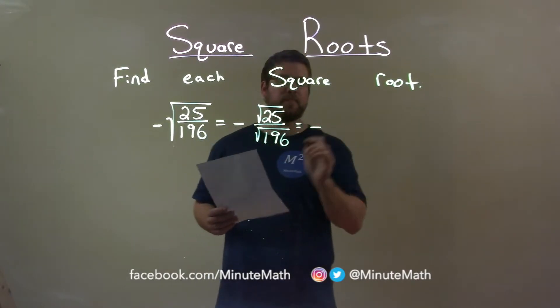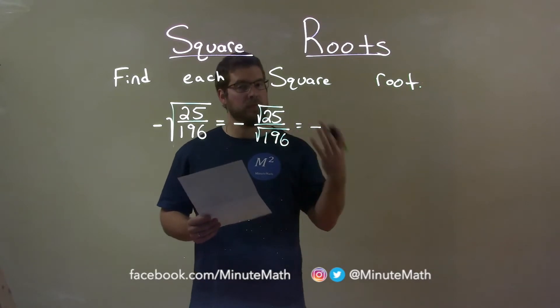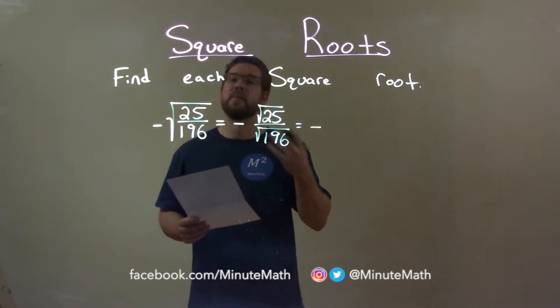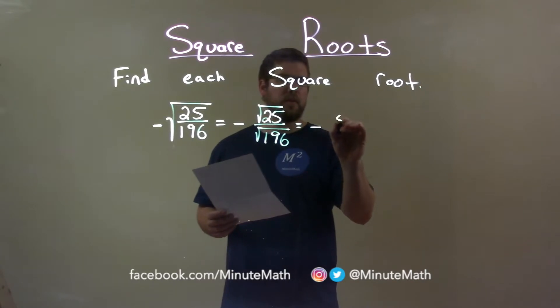Again, let's bring the negative over. For the square root of 25, what number times itself is 25? And that's 5. So, the square root of 25 is 5.